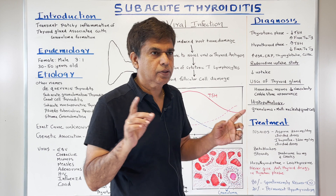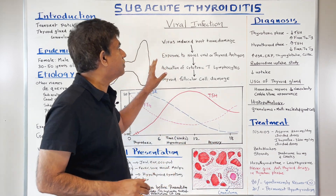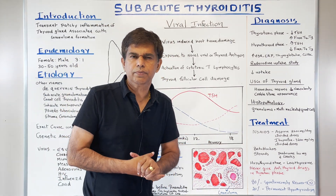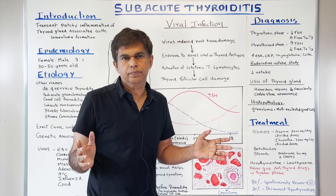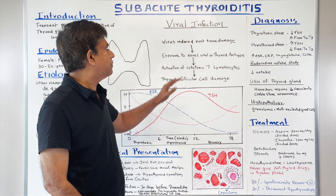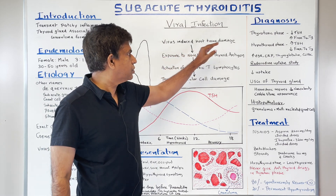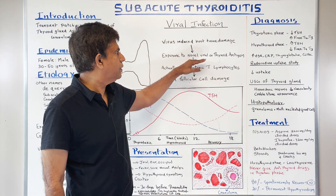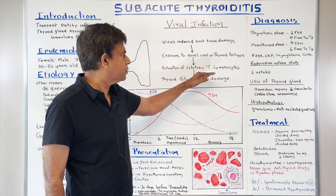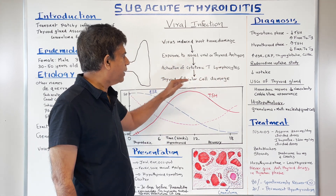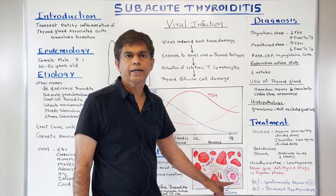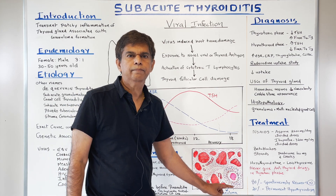Now let's look at the pathophysiology. The main mechanism involves a probable viral infection leading to virus-induced host tissue damage, exposure to viral or thyroid antigens, activation of cytotoxic lymphocytes, follicular cell damage, and ultimately granuloma formation.